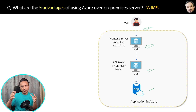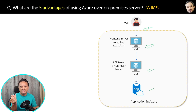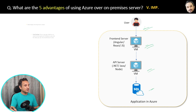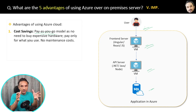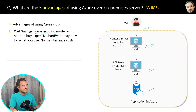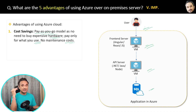Cost saving: for example, your company has 10 applications and has to purchase 10 physical servers. Tomorrow, if your company is running only five applications, the remaining five purchased physical servers will be wasted. But Azure has the pay-as-you-go model — your company subscribes to only the servers they need. If they want only two tomorrow, they remove three and don't pay for them. No need to buy expensive hardware, pay only for what you use, and no maintenance cost.